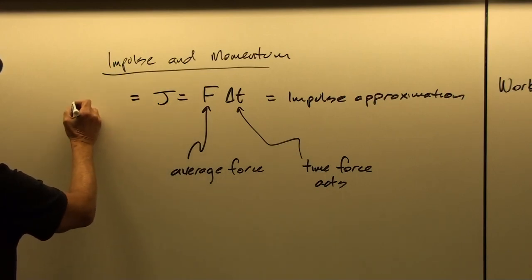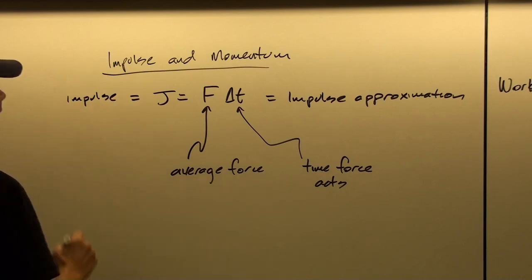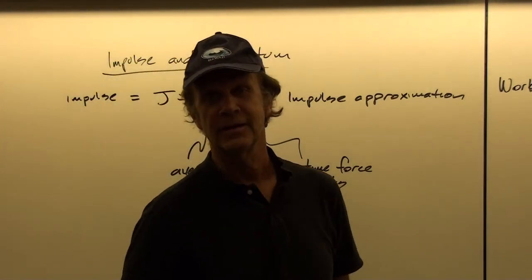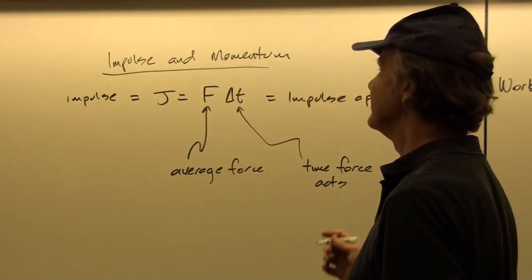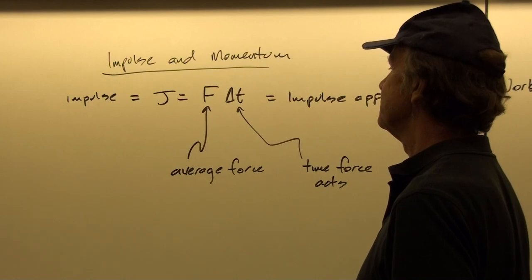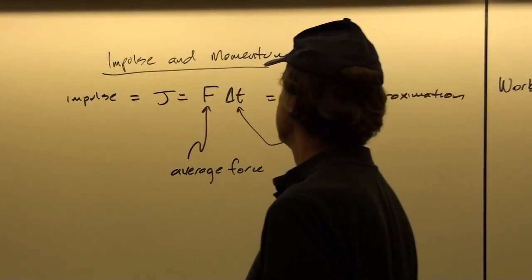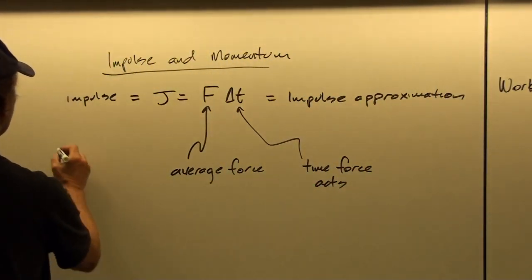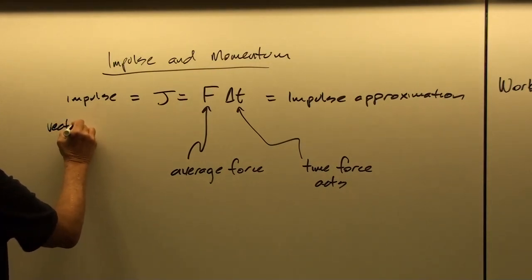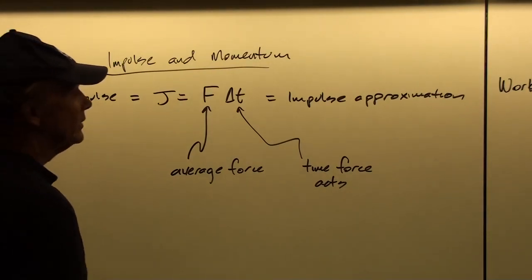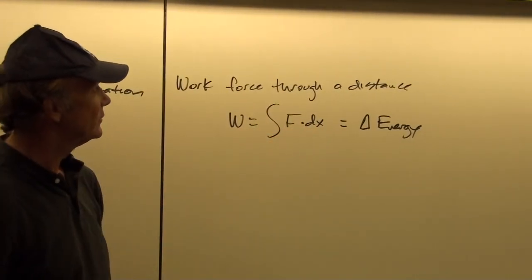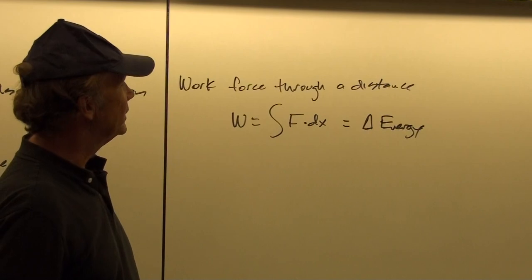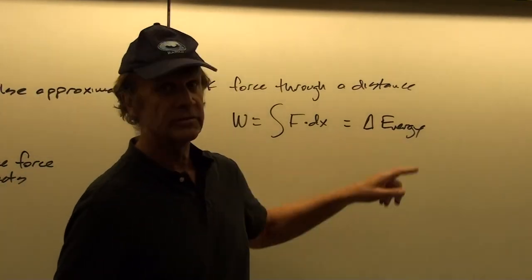You might wonder why we use J for impulse. Well, because I has already been taken — it's going to be moment of inertia later on. So we use J instead of I for impulse, though in some texts I have seen I used. Impulse is a vector rather than being a scalar, as was the case with work. Work involved two vectors but is a dot product, so it ended up being a scalar, and energy was a scalar.